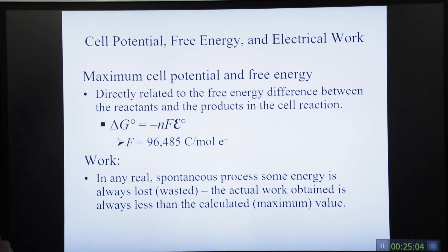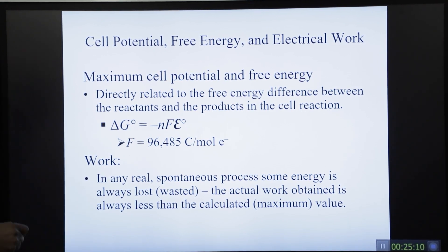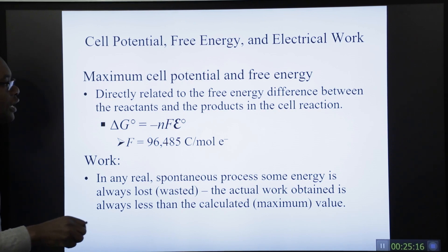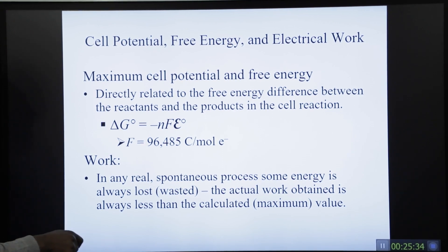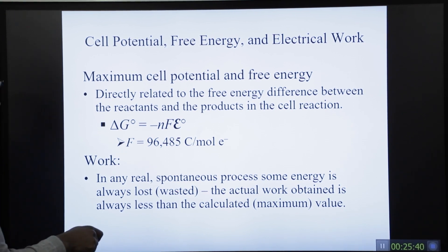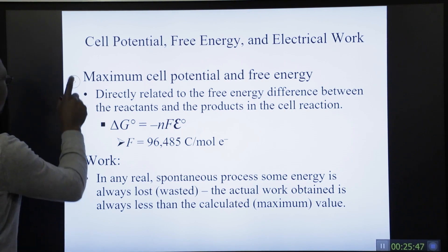The maximum cell potential is directly related to the free energy difference between reactants and products in the cell reaction. In any real spontaneous process, some energy is always lost or wasted, so the actual work obtained is always less than the calculated maximum value.